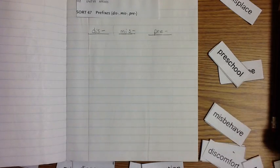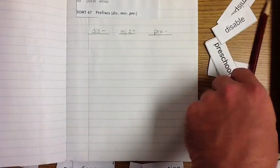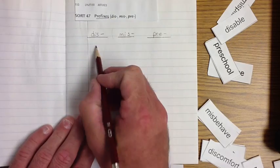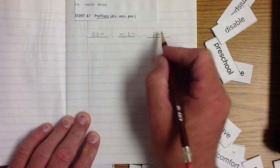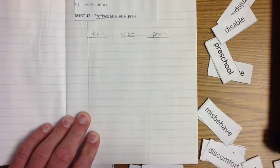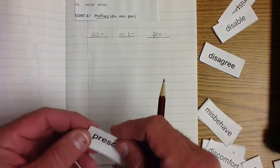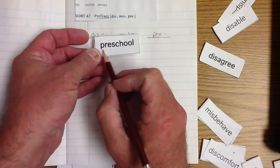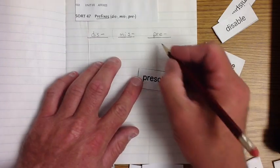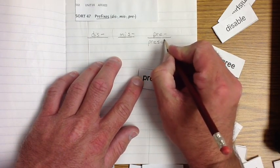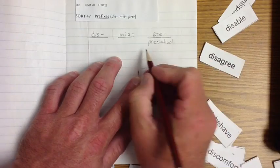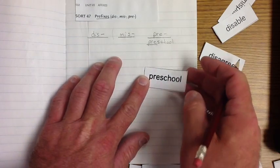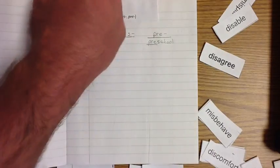What we're going to talk about is these three prefixes: dis, mis, and pre. The one we're going to start out with first is we're going to find out what does pre mean. We're going to go preschool. Let's write that. Preschool. I want you to underline the prefix. Preschool.